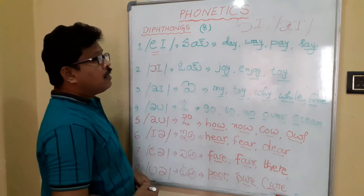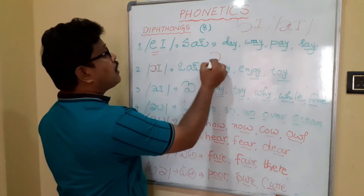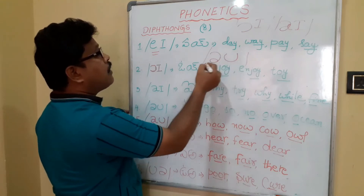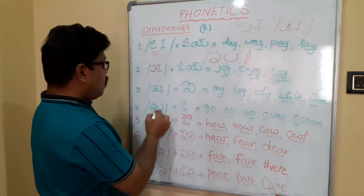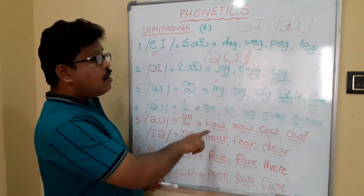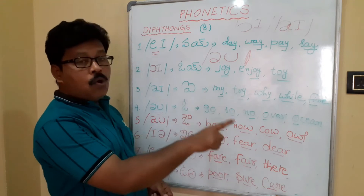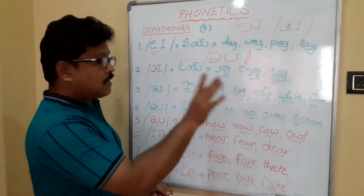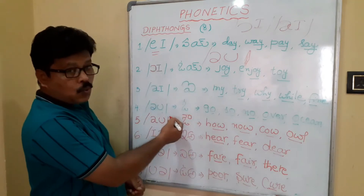The fourth diphthong: if you write weak A and O, this is the symbol for the /əʊ/ sound. Examples: go, so, no, over, ocean. Weak A plus O gives the /əʊ/ sound.